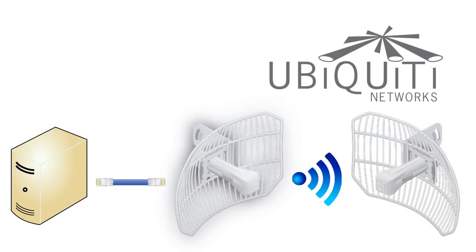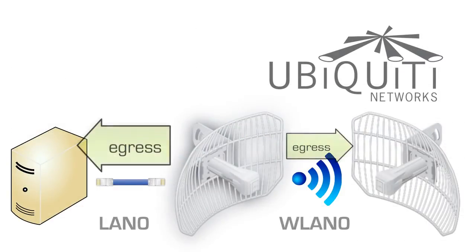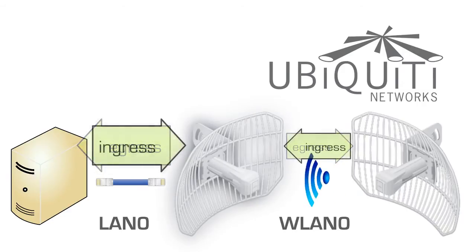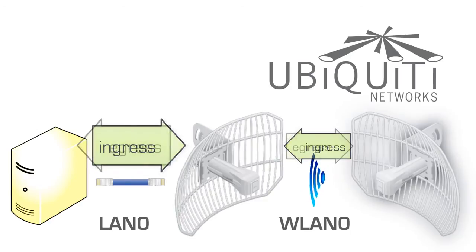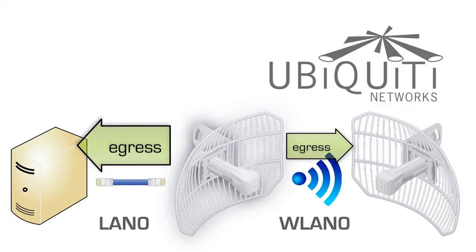We recommend using traffic shaping to control egress traffic because it is more efficient in the egress direction. When a port accepts ingress traffic, it cannot control how quickly the traffic arrives — the sending device controls that. However, when a port sends out egress traffic, it can control how quickly the traffic exits.